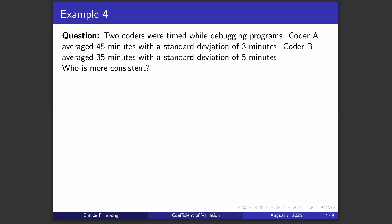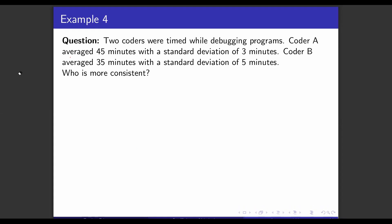Let's look at the fourth example and work it out together. Two coders were timed while debugging programs. Coder A averaged 45 minutes with a standard deviation of 3 minutes. Coder B averaged 35 minutes with a standard deviation of 5 minutes. Who is more consistent? Setting up: Coder A has mean of 45 minutes and standard deviation of 3; Coder B has mean of 35 minutes.